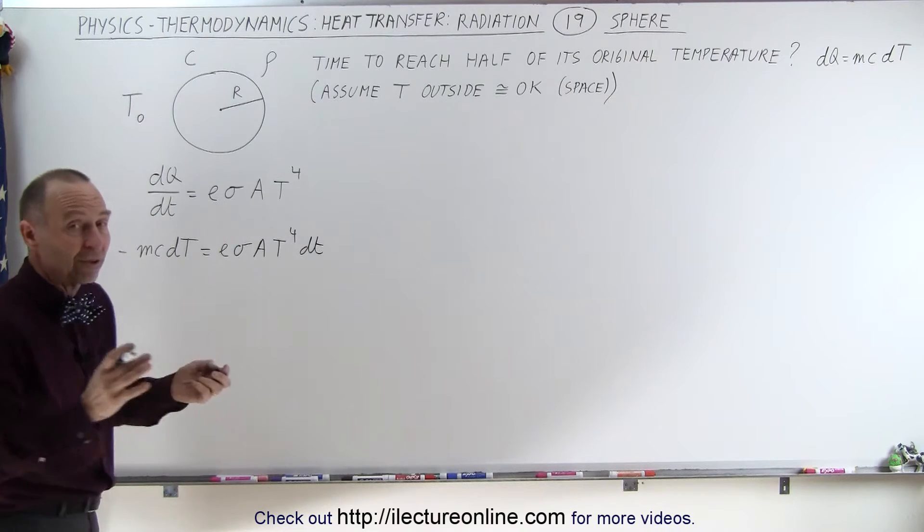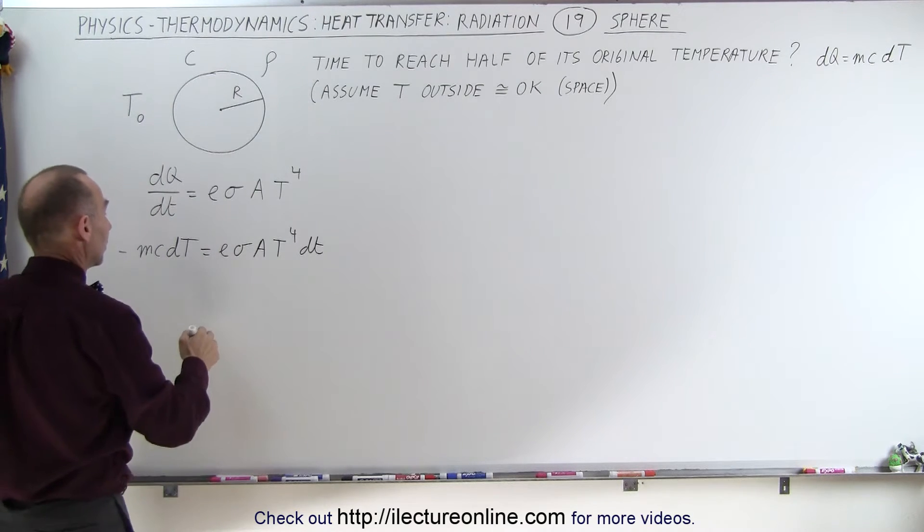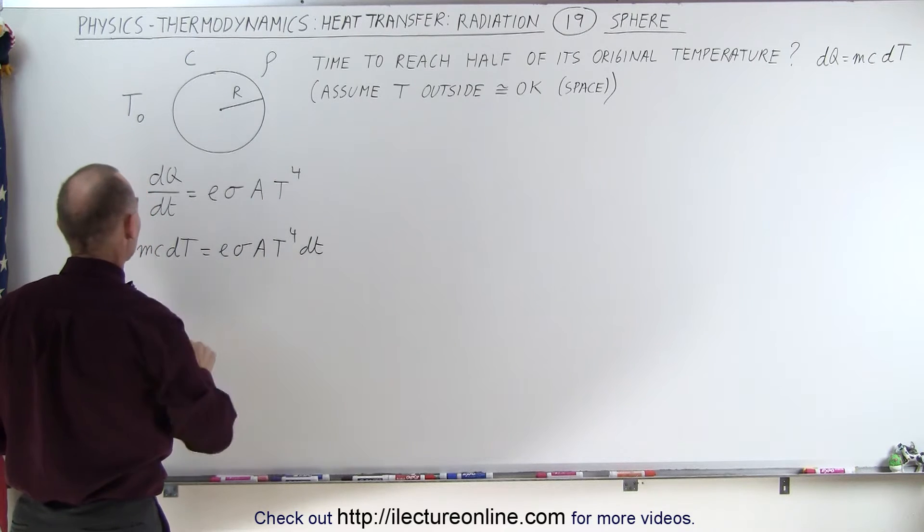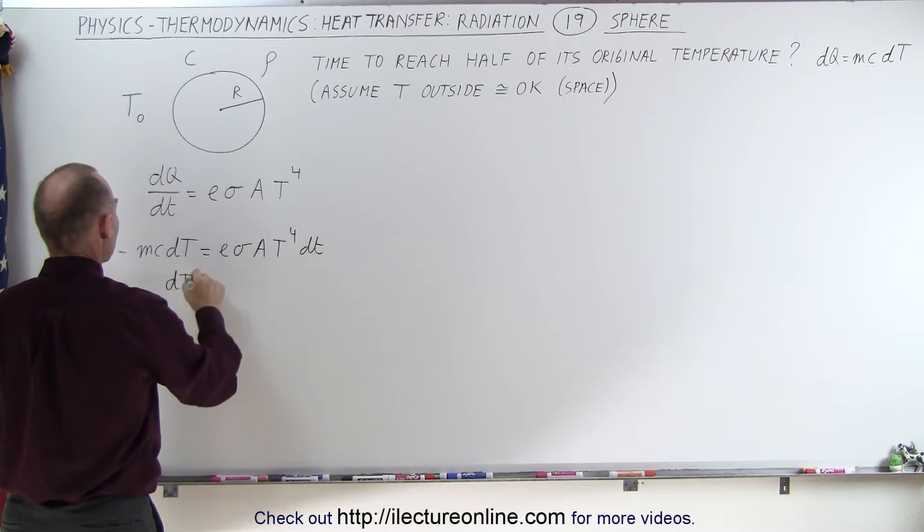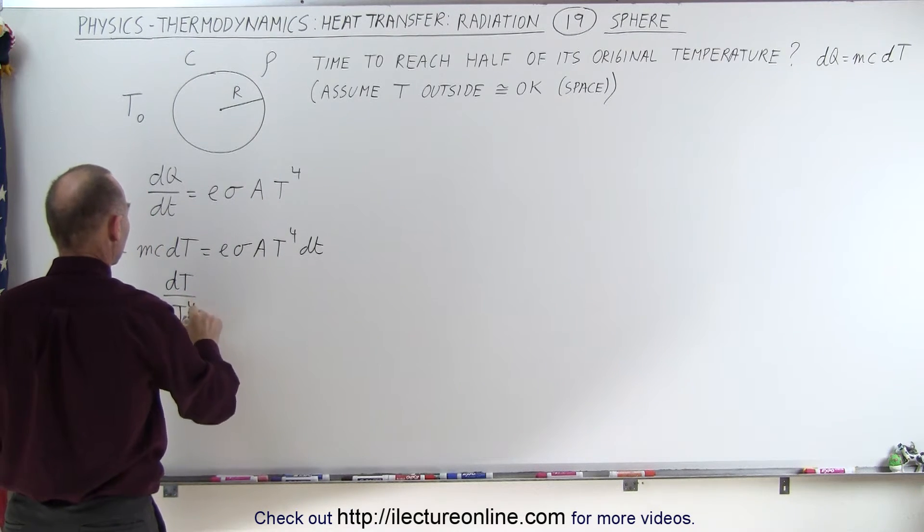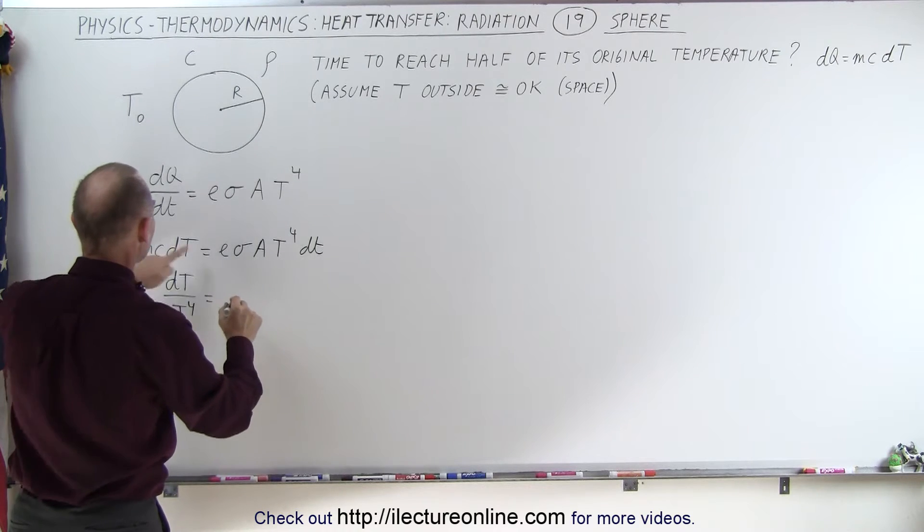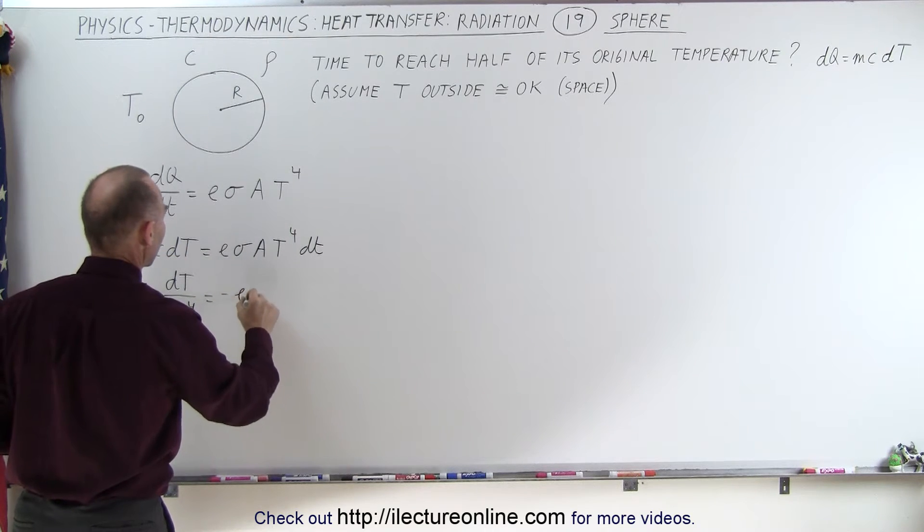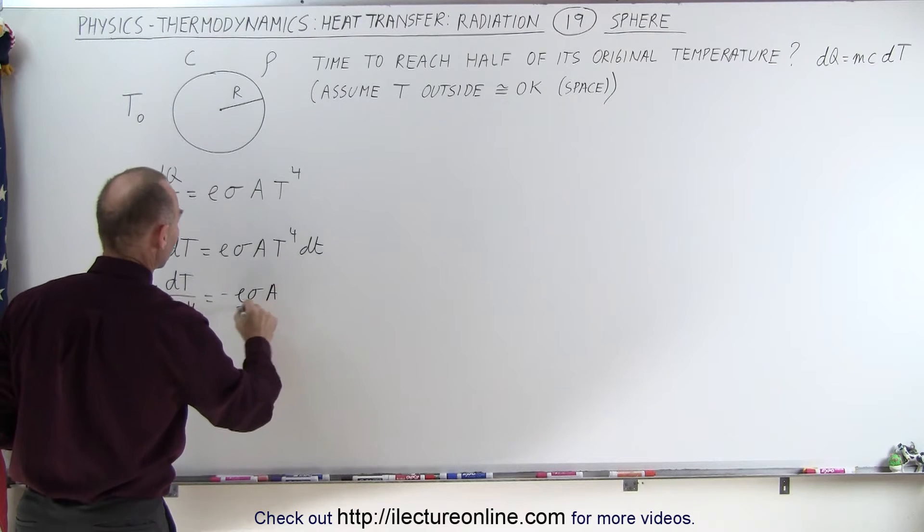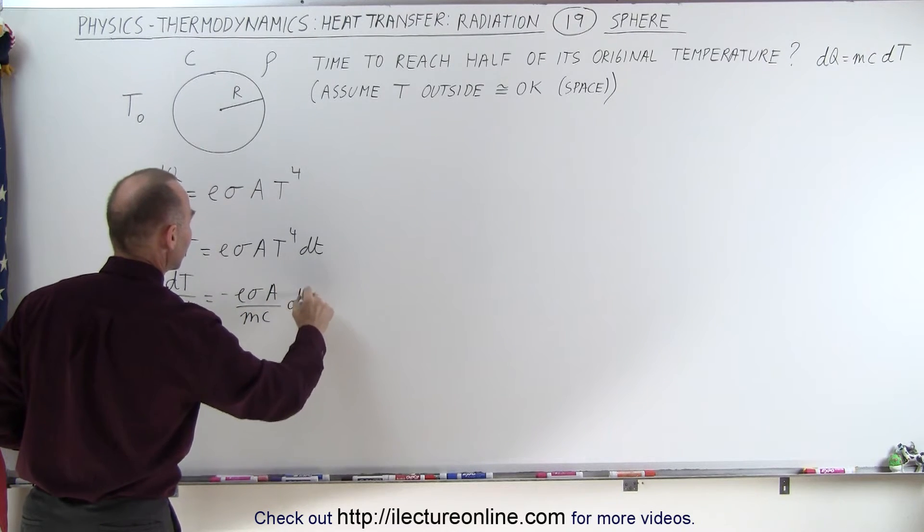Now, of course, we want to separate the variables. We want T on one side, the time on the other side, so we have dT divided by T to the fourth power is equal to, bringing a negative to the other side, minus epsilon sigma A divided by mc, and then we have dt.